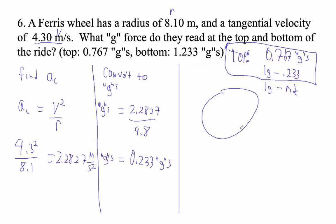And then at the bottom, it's going to be 1g plus the ride. That's easy, right? 1g plus 0.233 is 1.233 g's at the bottom.